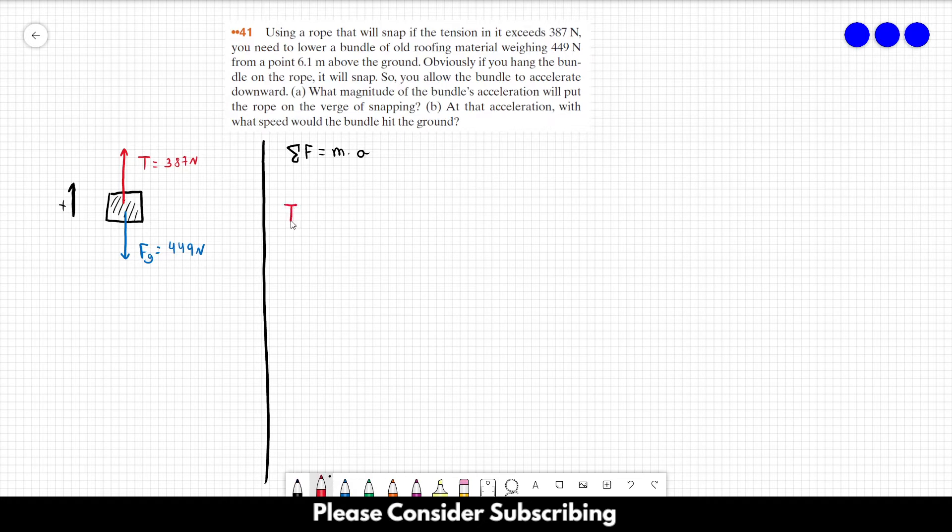So in this case, we have the tension, which is positive. We have Fg, which is negative. So I'm summing the forces, the tension and Fg. And this is equal to mass of the bundle times its acceleration.